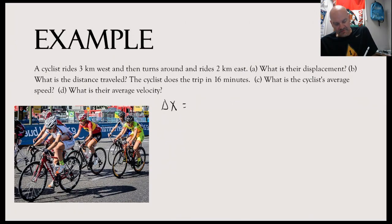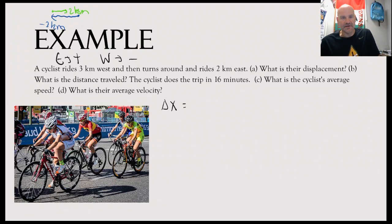Let's start with the displacement. So the way we think about it, east is the positive direction. West is the negative direction. So what they're doing is they're going three kilometers west. And sometimes it may be helpful to draw a picture. So I'm going to go three kilometers west. So I'm at negative three kilometers. And then I'm going to turn around and go two kilometers in the positive direction. So my final position, or what is my displacement?